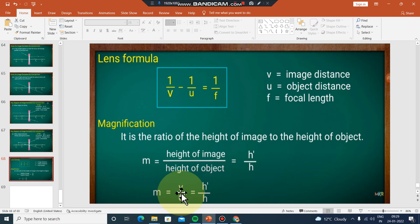The magnification formula is v divided by u. For mirrors it's minus v by u - magnification has a minus sign. The minus sign indicates whether the image is inverted or erect.